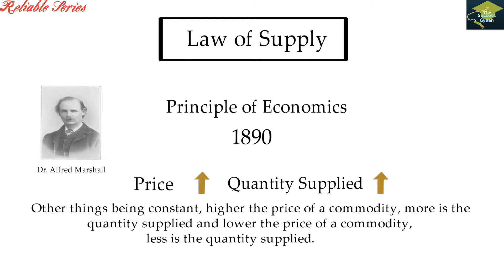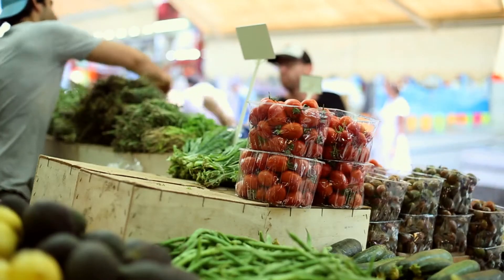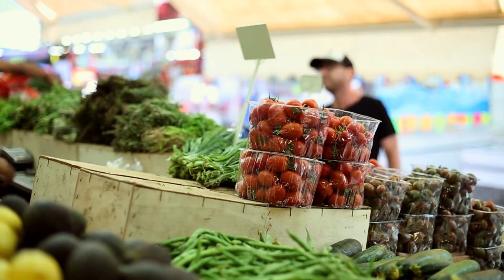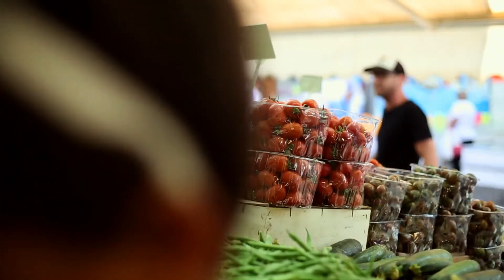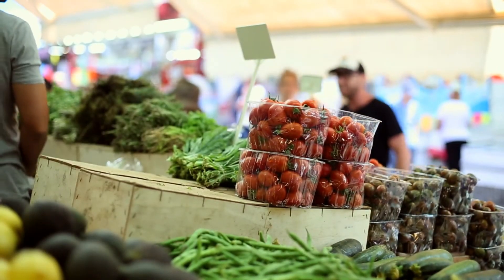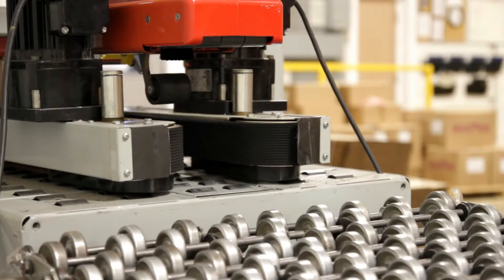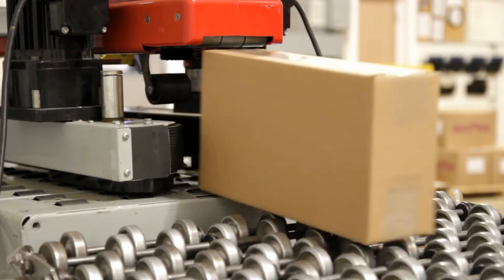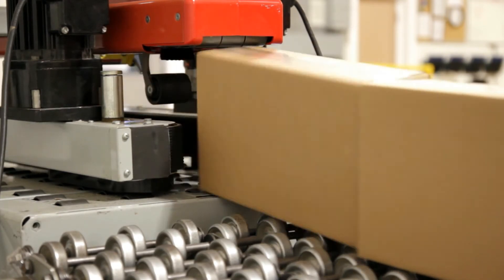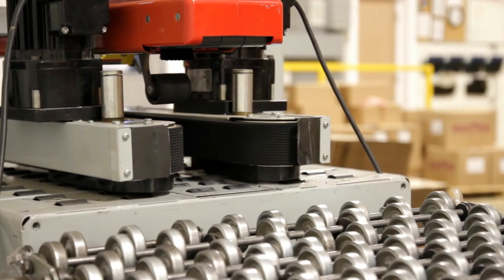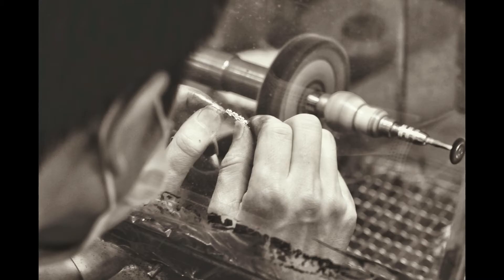Thus, there is a direct relationship between the price and the quantity supplied for any good or service. For example, जब fruits के prices increase होते हैं तो fruit vendors ज्यादा से ज्यादा fruits available करवाने पर focus करते हैं, और जब fruits के prices कम हो जाते हैं तो वो ज्यादा focus नहीं करते. इसी तरह कोई भी producer तभी ज्यादा supply करता है जब उसको ज्यादा price मिलता है, otherwise जब price कम होता है तो वो supply कम कर देता है.